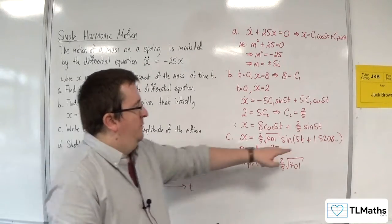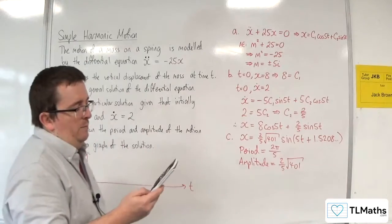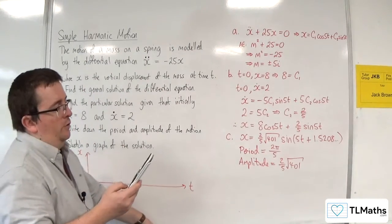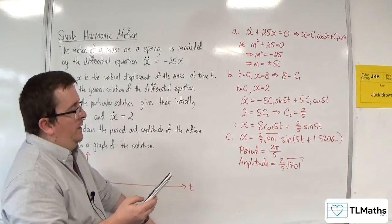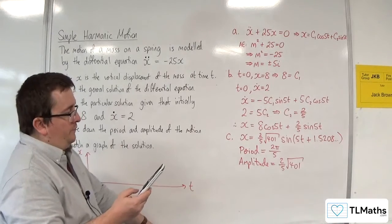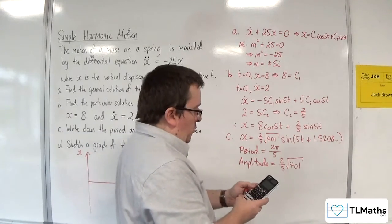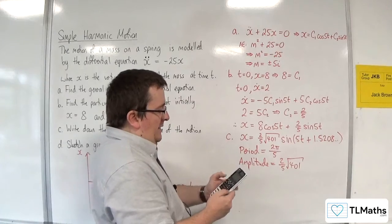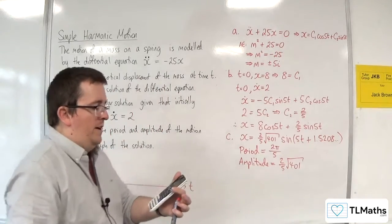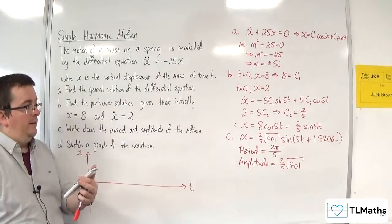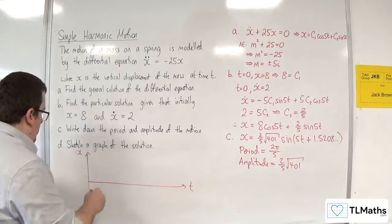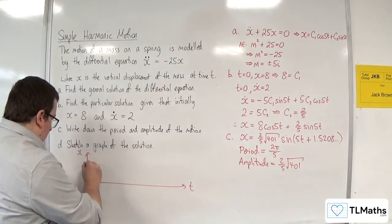So if I just put in 1.5208, I get 7.999984822. So yeah, we're starting at 8. And you might want an idea of what 2/5 times root 401 actually is. And that's 8.00993758. So it's very close to 8. So actually, the curve does something like this.